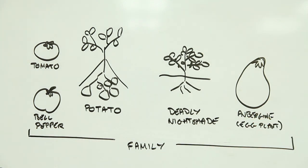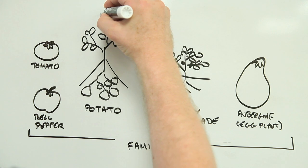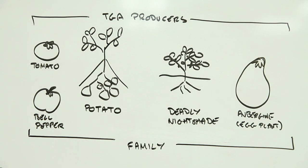However, plants in the nightshade family do have a tendency to produce poisonous chemicals called toxic glycoalkaloids, or TGAs for short. And potatoes are no exception.